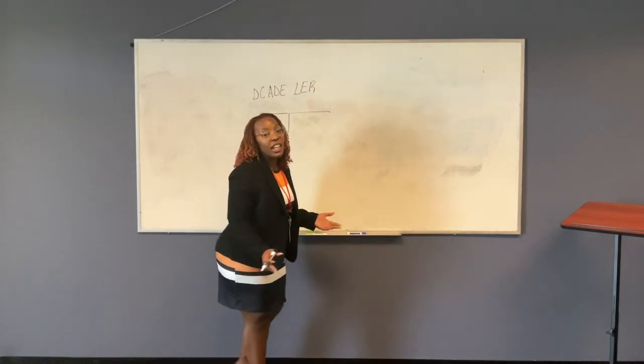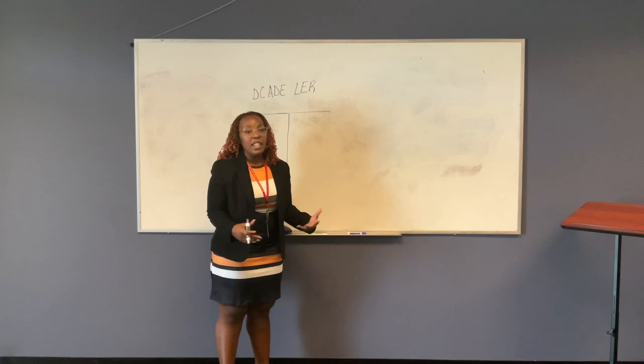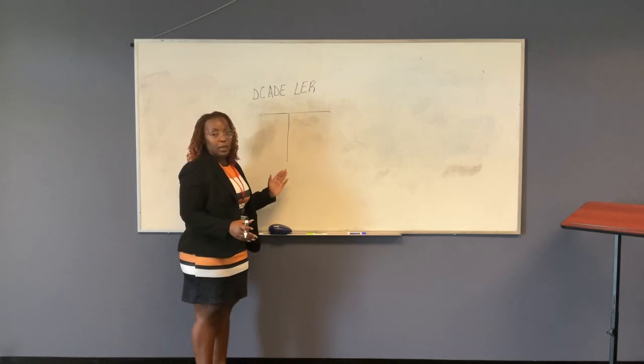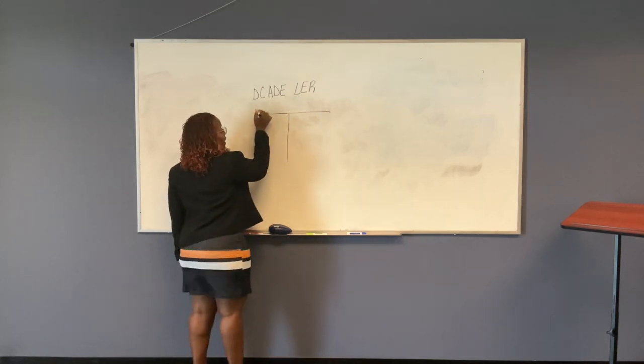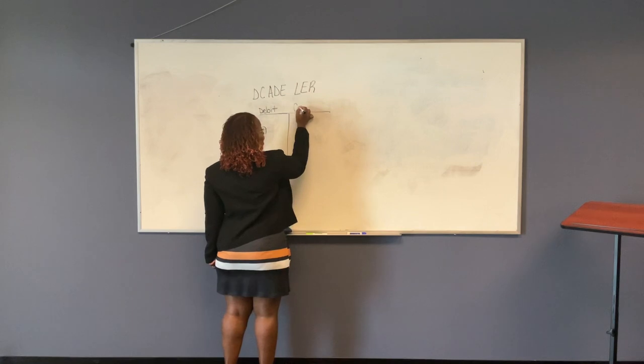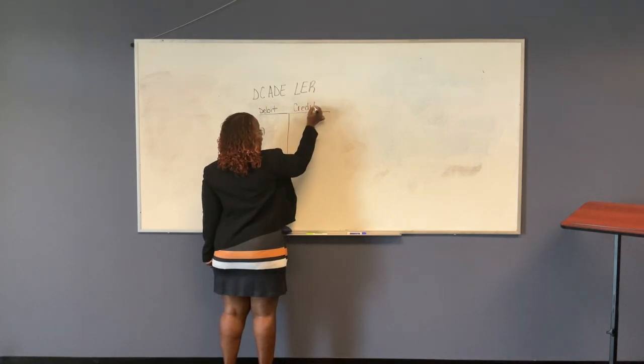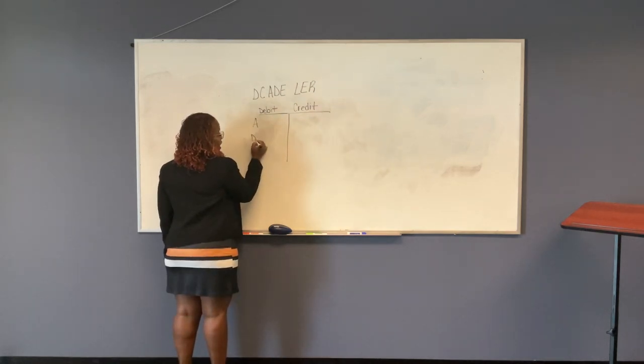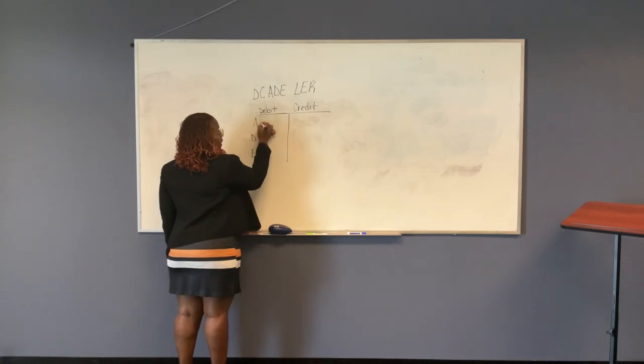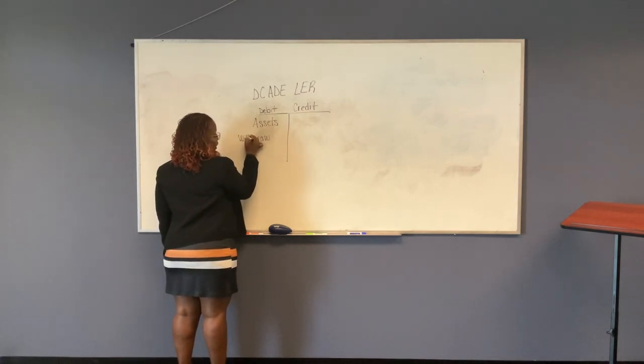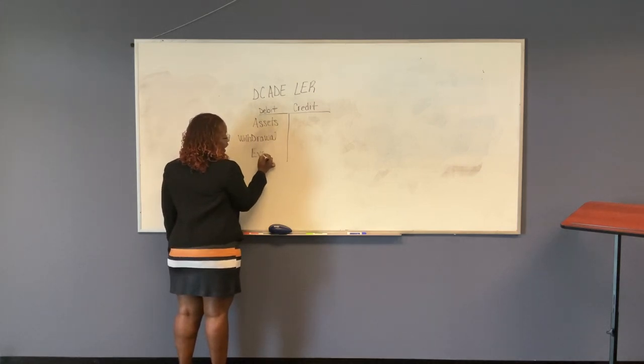He says it and I'm going to say it. Anytime you're doing a transaction, anytime you're doing anything in accounting, it's good to start here. D.C.A. Dorn and a T account. The D is for debit. The C is for credit. Now let's start with ADE. A.D.E. The A is assets. This is draw or withdrawal. And then you have expenses.